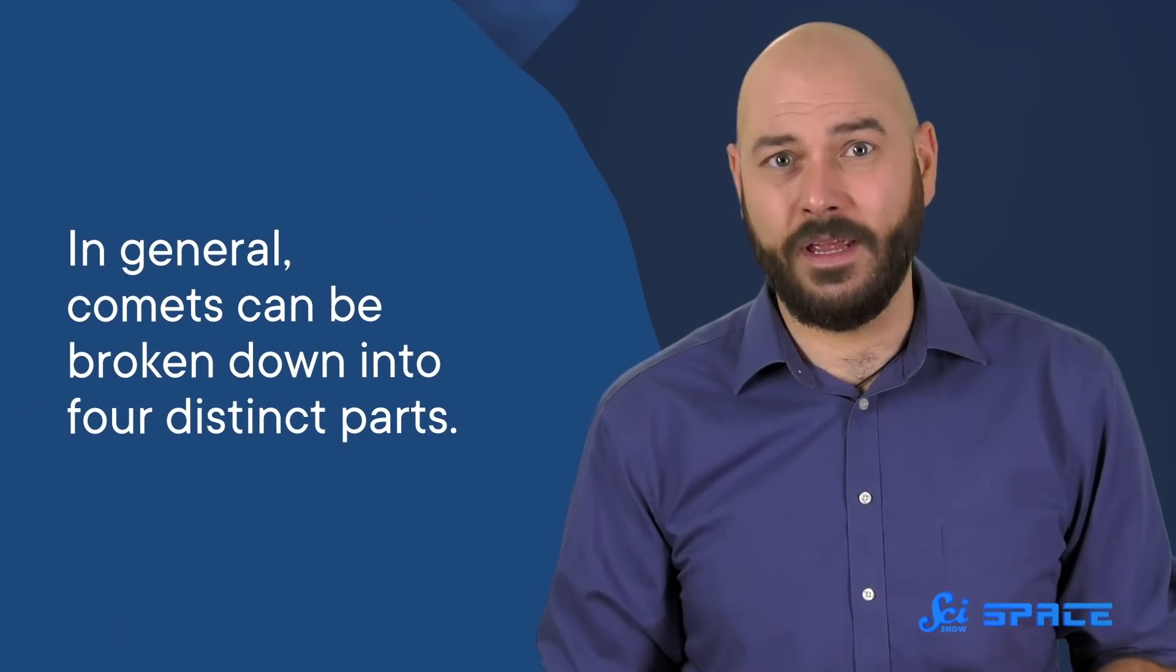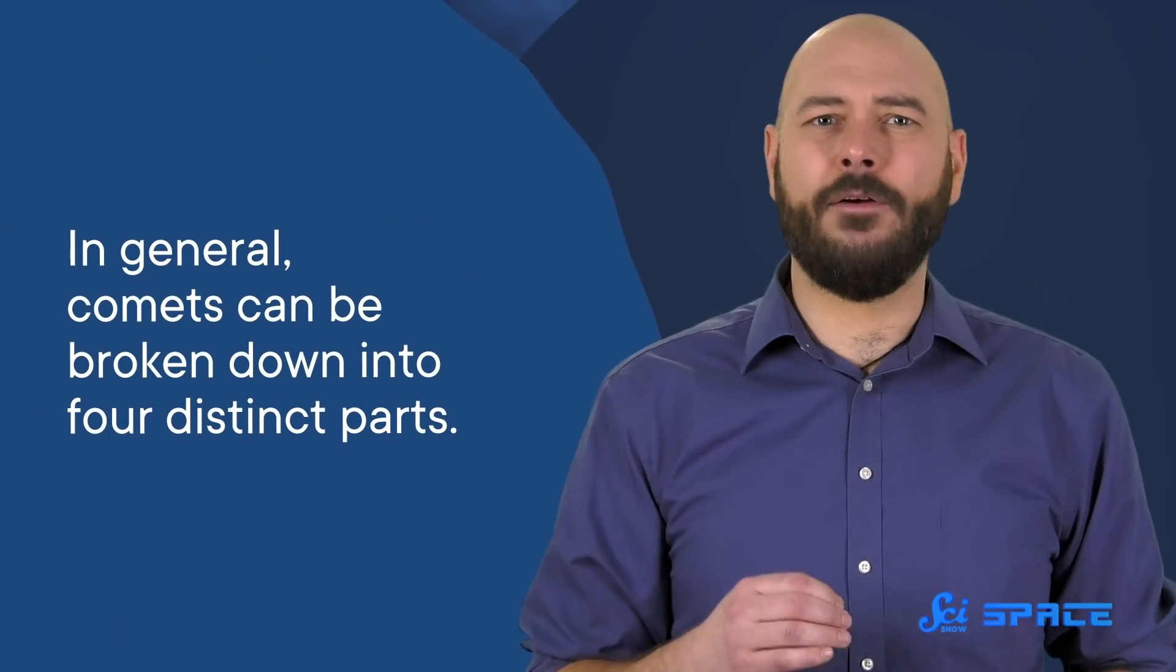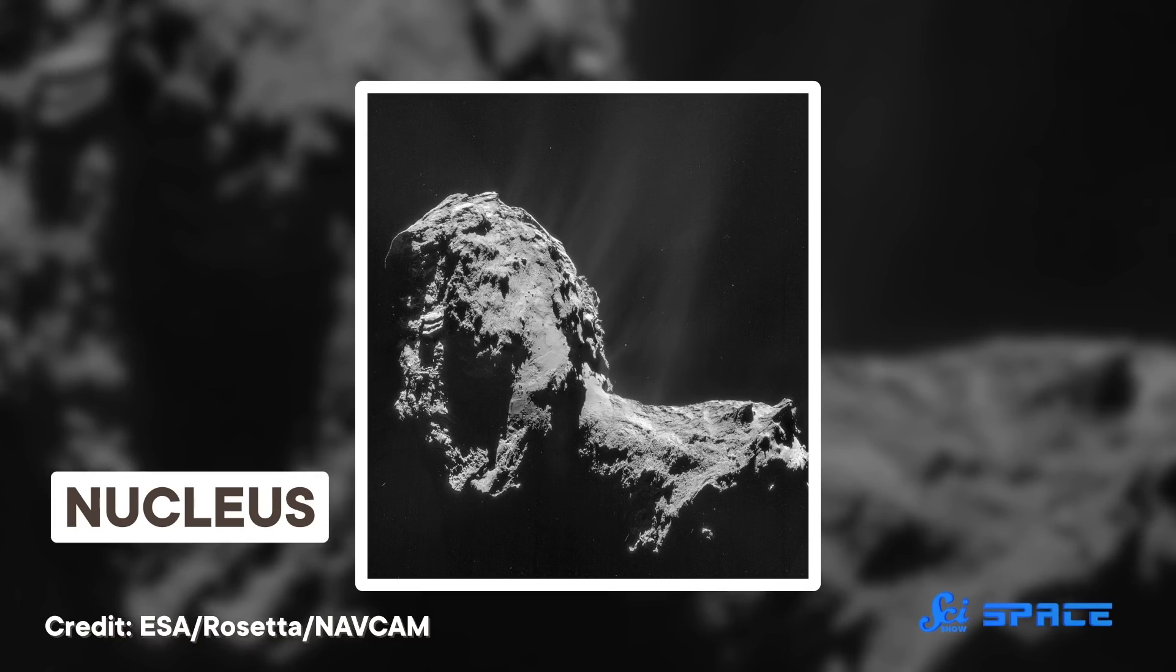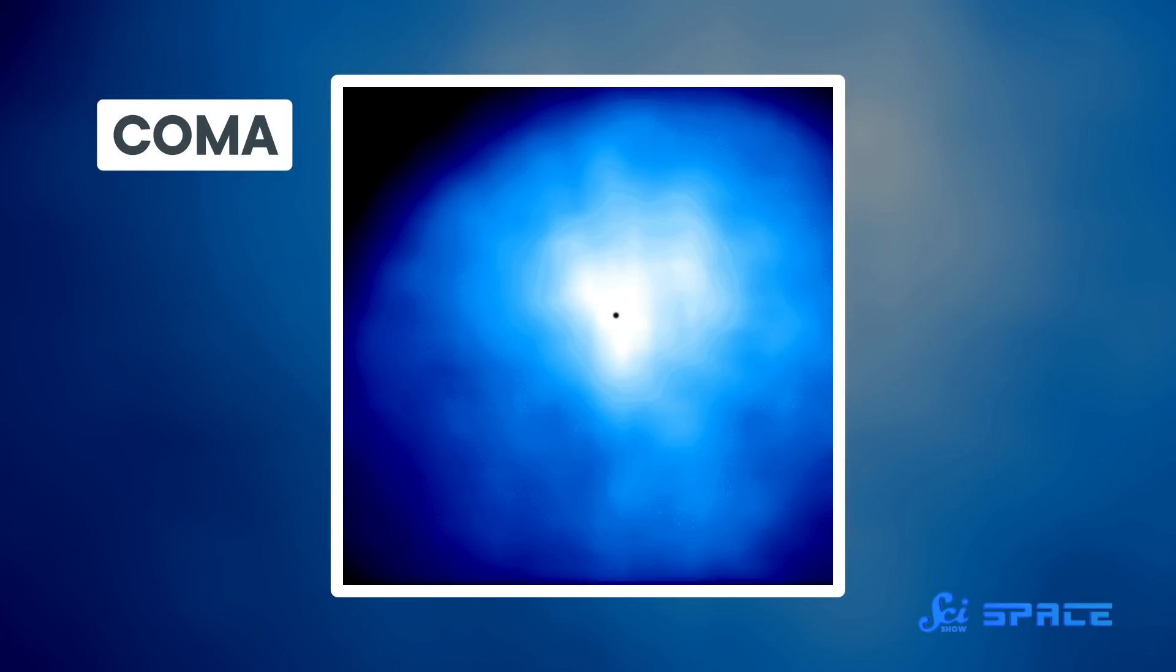As a comet gets closer to the sun, it begins to heat up, which transforms it from basically a ball of ice into the more extended object we're familiar with. In general, comets, when we see them, can be broken down into four distinct parts. The most substantial is the nucleus, which is the hard, icy object at its center. Around the nucleus swirls the coma, an envelope of gas and dust that has evaporated from the nucleus as the comet heats up.